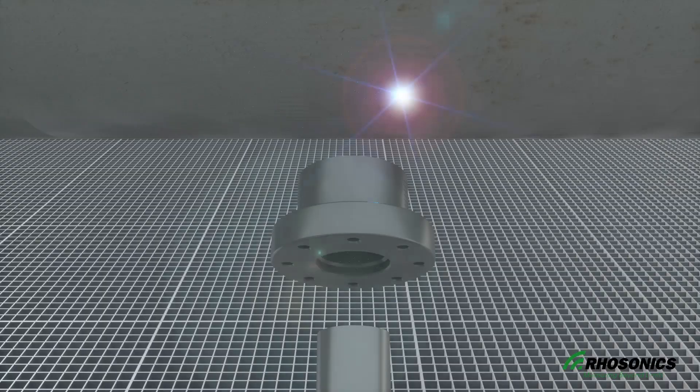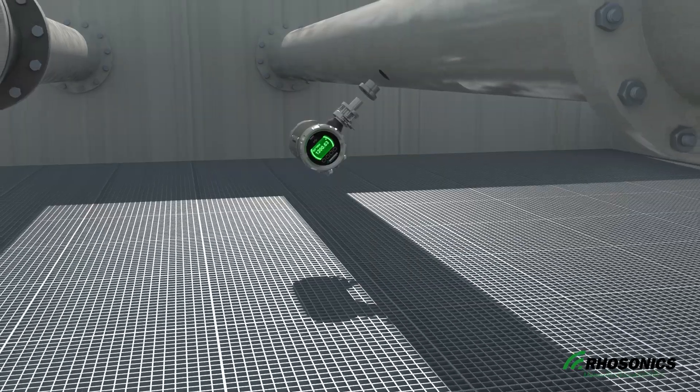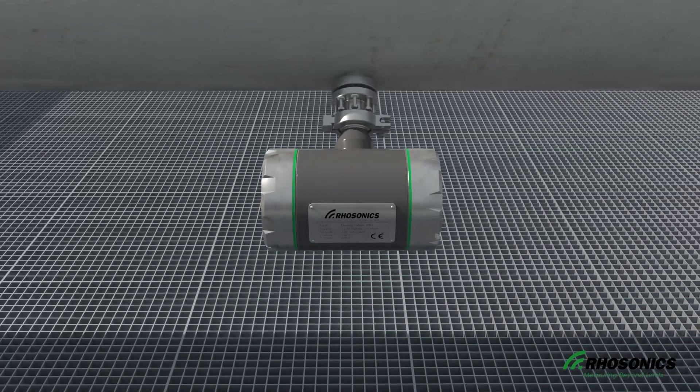Your second option is to weld an adapter to an existing pipe. For the best measurements, the sensor is placed in a 45-degree angle.